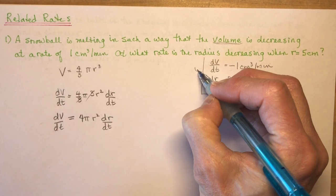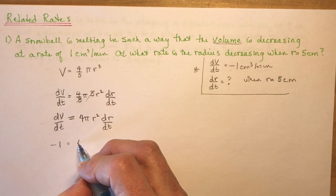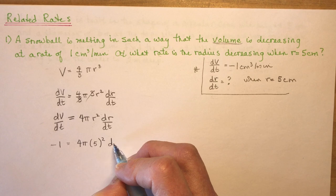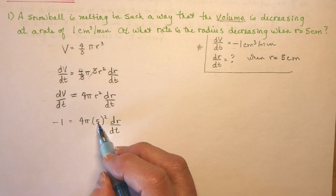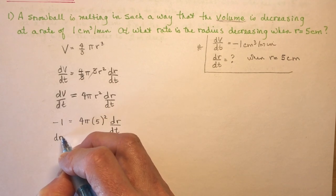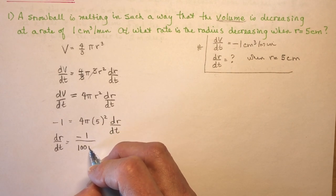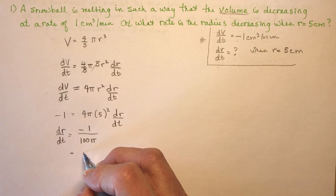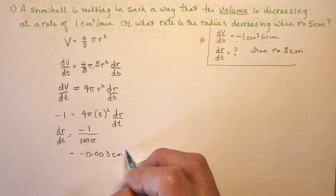Now I go to my information box and plug in everything I know. dv/dt is minus one, r is five, and all I have to do is solve for dr/dt. Five squared is 25, times four is 100, so I have 100 pi. Dividing by 100 pi, dr/dt equals minus one over 100 pi, which on your calculator gives about minus 0.003 centimeters per minute.